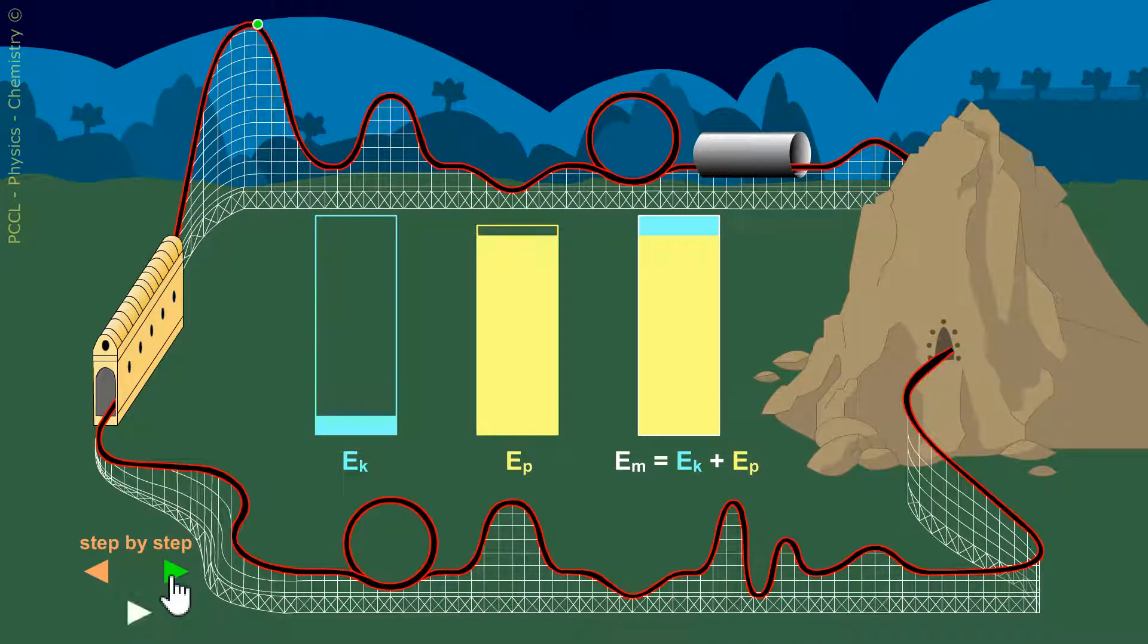If the objective study, the open car, goes down, the kinetic energy increases, the potential energy decreases. Why? Because the speed, we will also say velocity, increases and the altitude decreases.